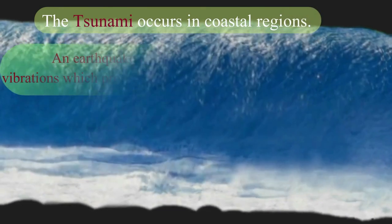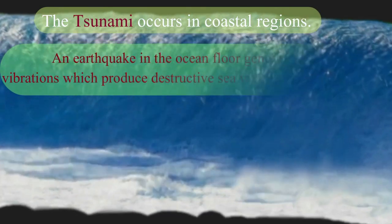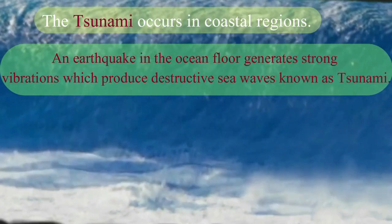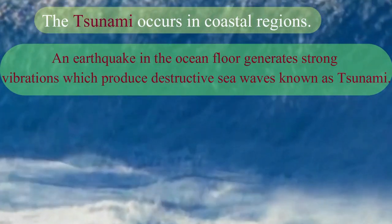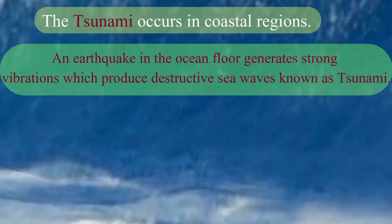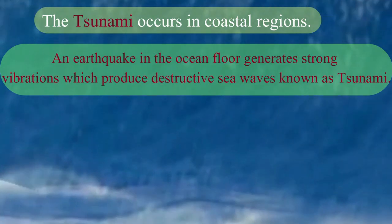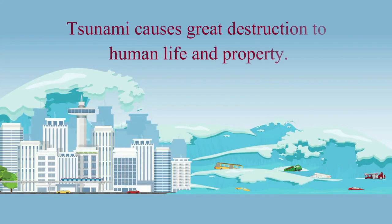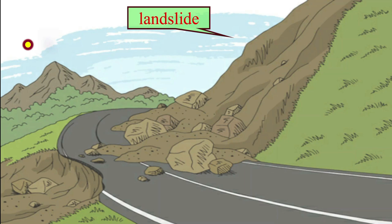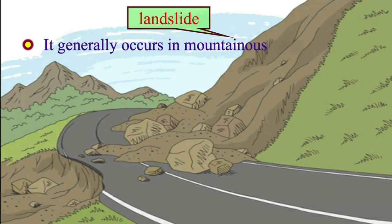An earthquake in the ocean floor generates strong vibrations which produce destructive sea waves known as tsunami. Tsunami causes great destruction to human life and property when they strike coastal regions. Landslides generally occur in mountainous areas.